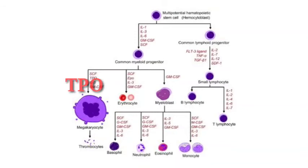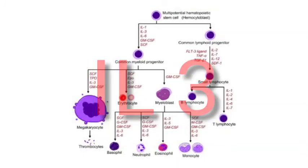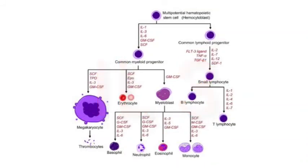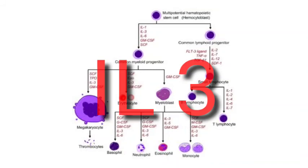The earliest acting growth factor, known as multi-colony stimulating factor or interleukin-3, is responsible for many cell lines. It acts on pluripotent stem cells, myeloid stem cells, granulocyte-monocyte progenitor cells, monocytes, neutrophils, eosinophils, mast cells, megakaryocytes, and erythroid progenitor cells. So interleukin-3 is mostly responsible during the whole process of hematopoiesis.